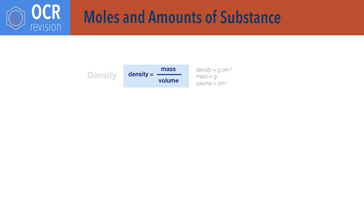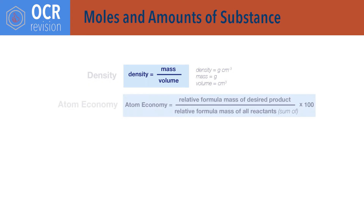Density equals mass divided by volume, where the units for density are based on the units of mass and volume — for example, grams per centimetre cubed. Atom economy equals relative formula mass of desired product divided by the sum of the relative formula masses of all reactants, times 100.